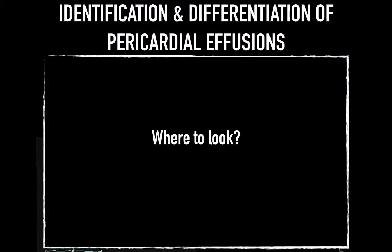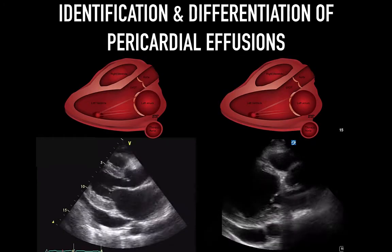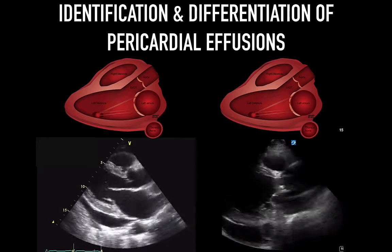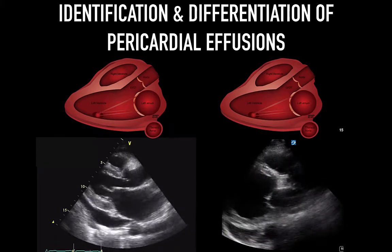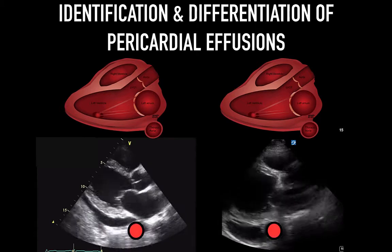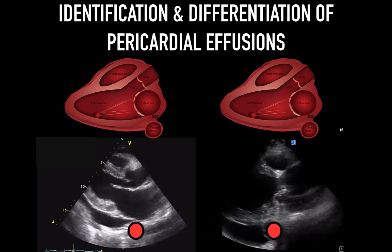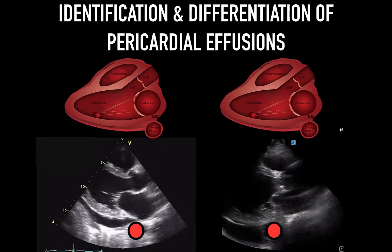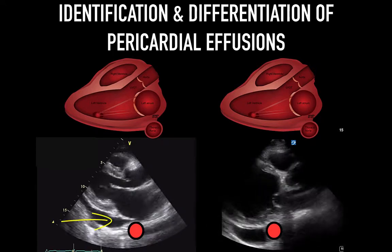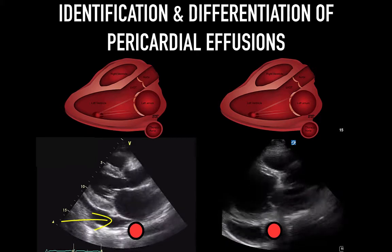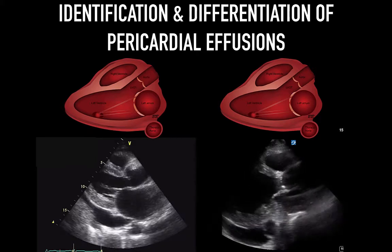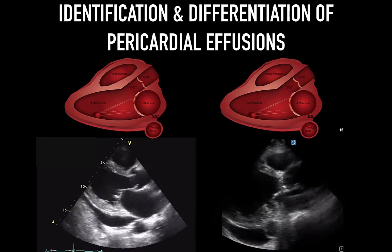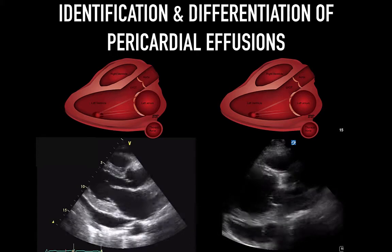The most common view where they can be mistaken is the parasternal long axis view. In this view, the left pleural space can appear to mimic a pericardial effusion inferior or posterior to the heart. The landmark is the aorta, which is outside the pericardium and passes just posterior to the left atrium. Thus, a significant pericardial effusion will appear like a wedge between the LA and the aorta, like the clip on the left. A pleural effusion will generally appear like a square shape abutting the aorta and won't slide itself in between the aorta and the left atrium.